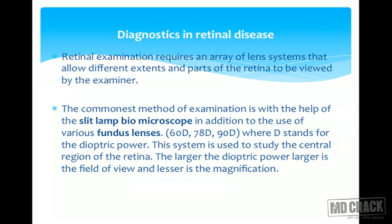The retinal examination is something different from the routine ophthalmic examination. It does require an array of lenses and lens systems to see different extents and parts of the retina. The commonest method is with the help of a slit lamp biomicroscope using fundus biomicroscopy lenses — the 78D, 90D, and 60D — which allow a stereoscopic view of the posterior pole, the disc, and the retina till the mid periphery.